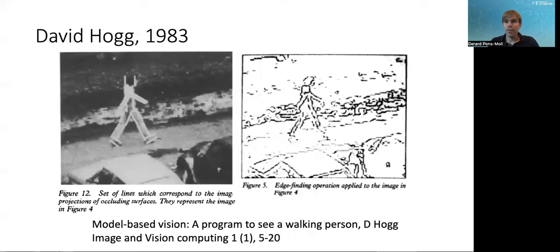The first work to really fit human models, 3D human models to images was the groundbreaking work of Hogg, which basically the model was based on matching model lines to edges detected in the image. This was this generative approach that I was talking before. And this was as early as 1983.